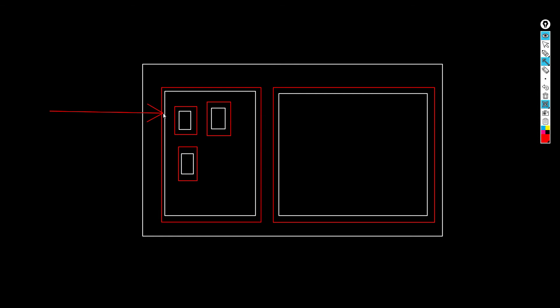You can think of NACL as subnet-level access control and security groups as EC2 instance-level access control. This diagram gives a clear picture of what NACL is, at what level it acts, and at what level security groups provide security.